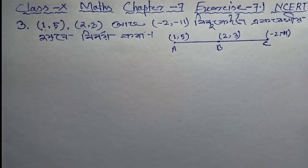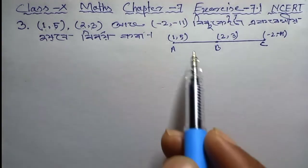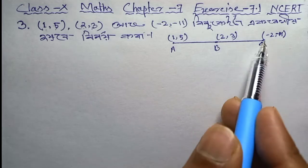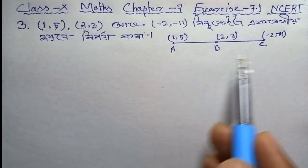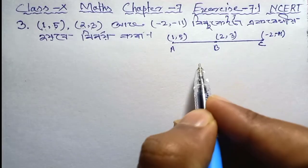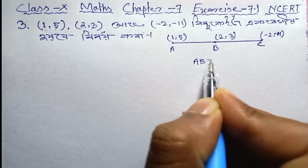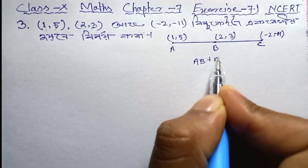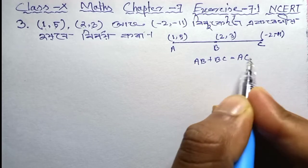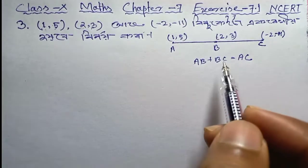So, AB plus BC will equal AC. This means that the points are collinear — AB plus BC equals AC.